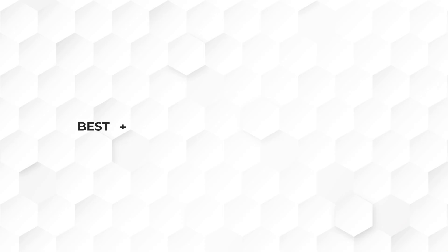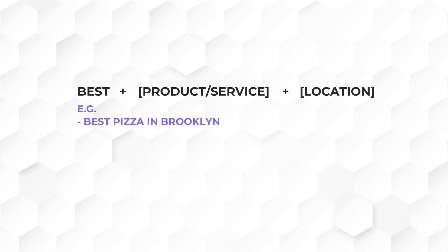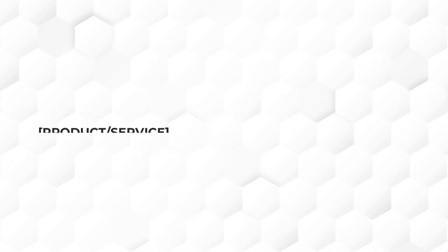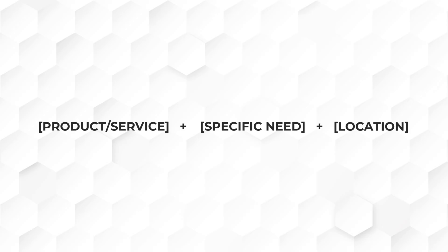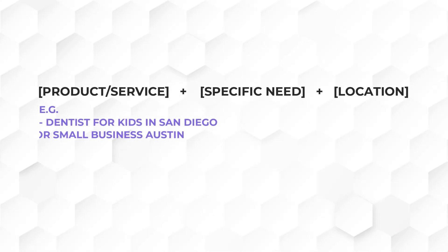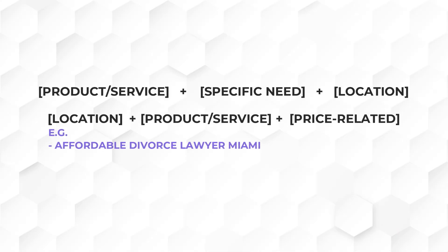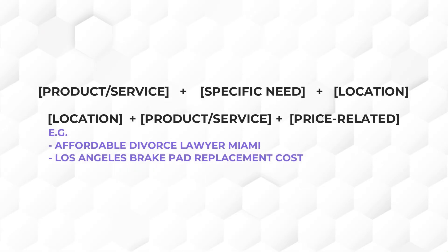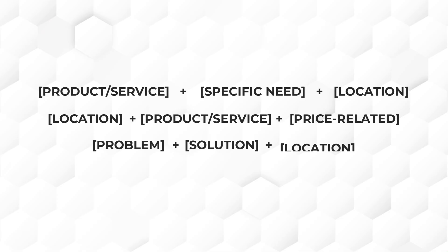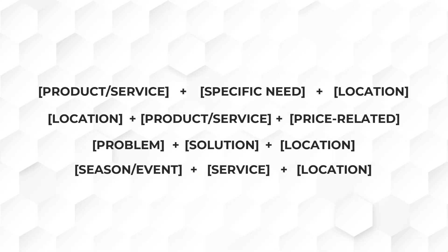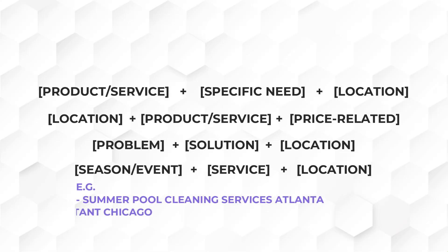Next, we have 'best' plus product or service plus location — such as 'best pizza in Brooklyn' or 'best HVAC company Phoenix.' These work because they have commercial intent. Also try product or service plus specific need plus location — like 'dentist for kids in San Diego.' Location plus price-related terms like 'affordable divorce lawyer Miami,' problem plus solution plus location like 'leaking pipe emergency repair Houston,' and seasonal keywords like 'summer pool cleaning service Atlanta' or 'tax season accountant Chicago.'